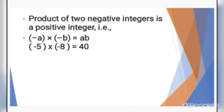The product of 2 negative integers is a positive integer. That means if both integers in a multiplication are negative, the answer will be a positive integer. For example, minus 5 into minus 8 gives 40.